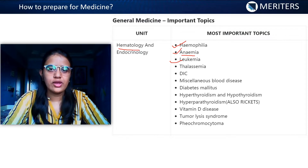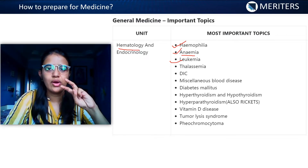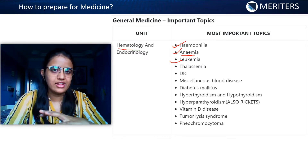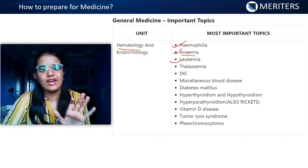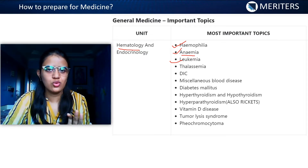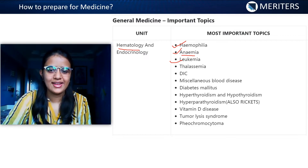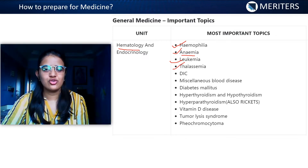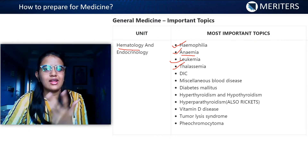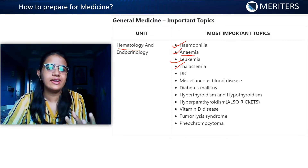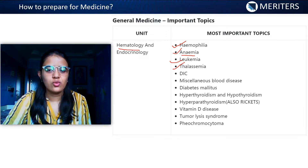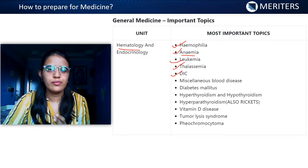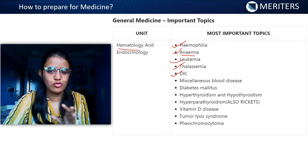Next is leukemia — all four types: AML, ALL, CML, and CLL. Everything is important but you don't need to go into detail. For each leukemia, there are around five to seven important points you just need to know. Next is thalassemia — major thalassemia and minor thalassemia, what transfusion can be given as treatment. Then there is DIC — it's not a very important topic, you just need to know a gist about it.